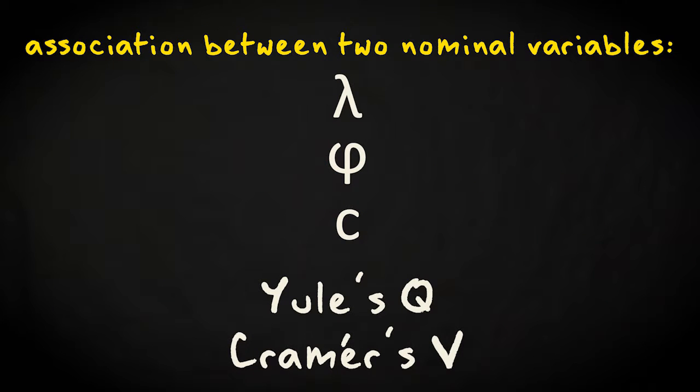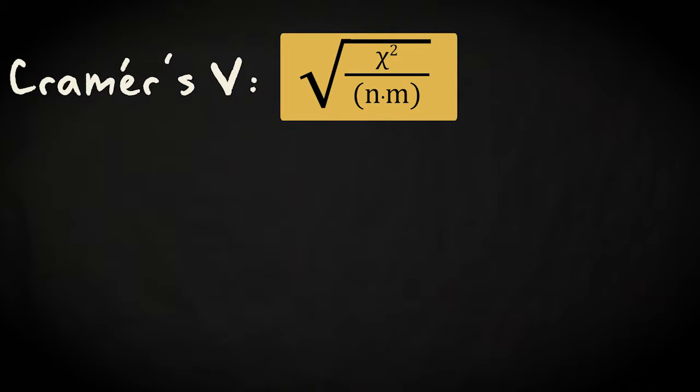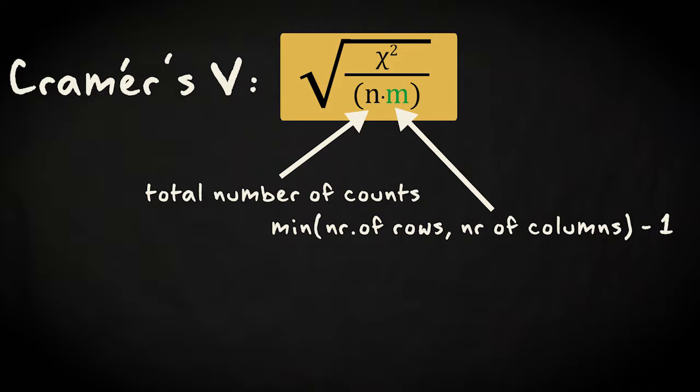Several indices have been created to express the strength of association between two nominal variables. And the most popular is Cramer's V. This is the equation by which you can calculate it. You have to take the square root of the chi-squared value, divided by the total number of counts and the index M. M is the smaller value of the number of rows and the number of columns minus one.